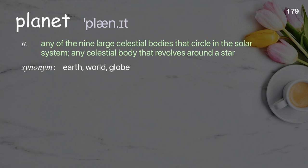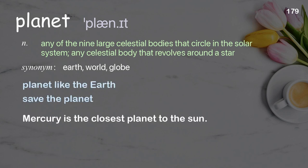Planet: any of the nine large celestial bodies that circle in the solar system; any celestial body that revolves around a star. Examples: Planet like the earth. Save the planet. Mercury is the closest planet to the sun.